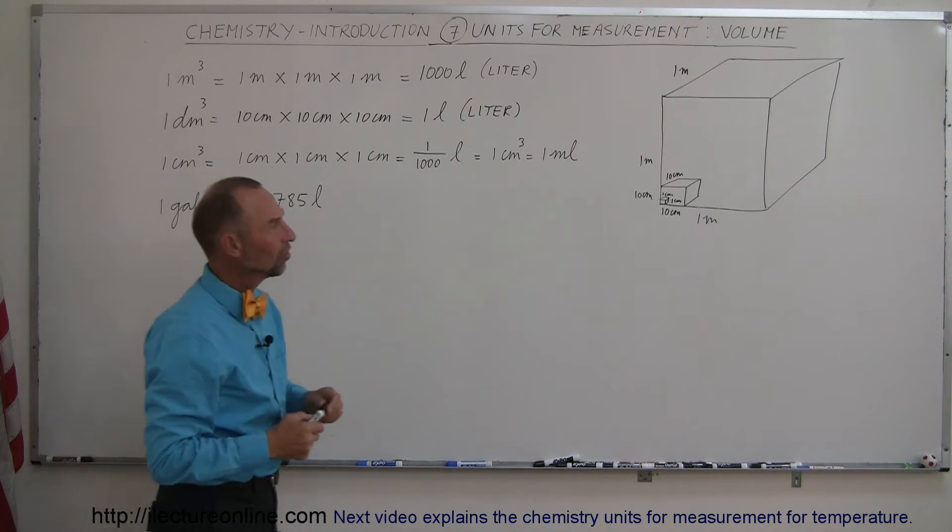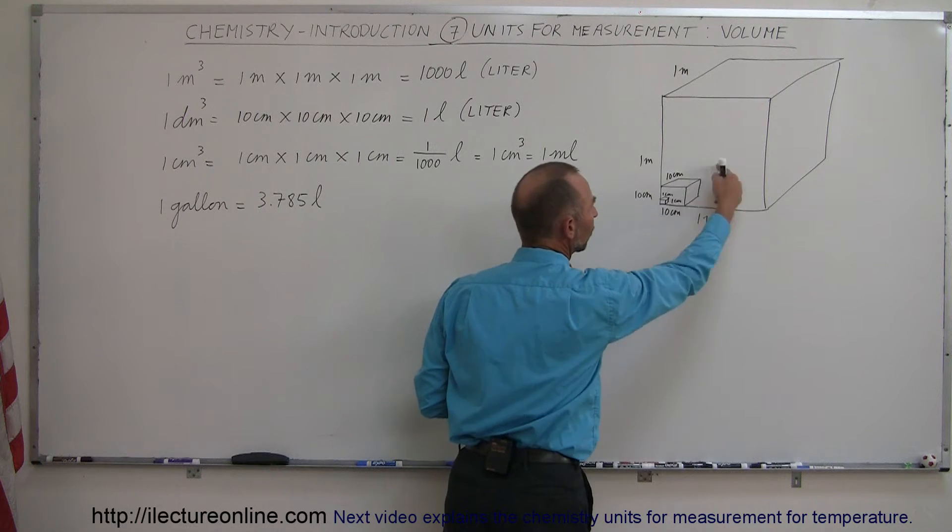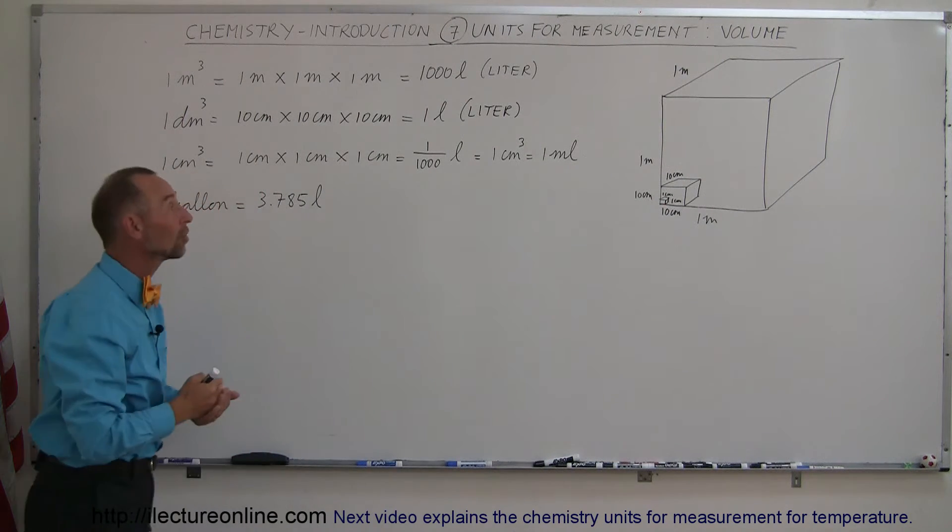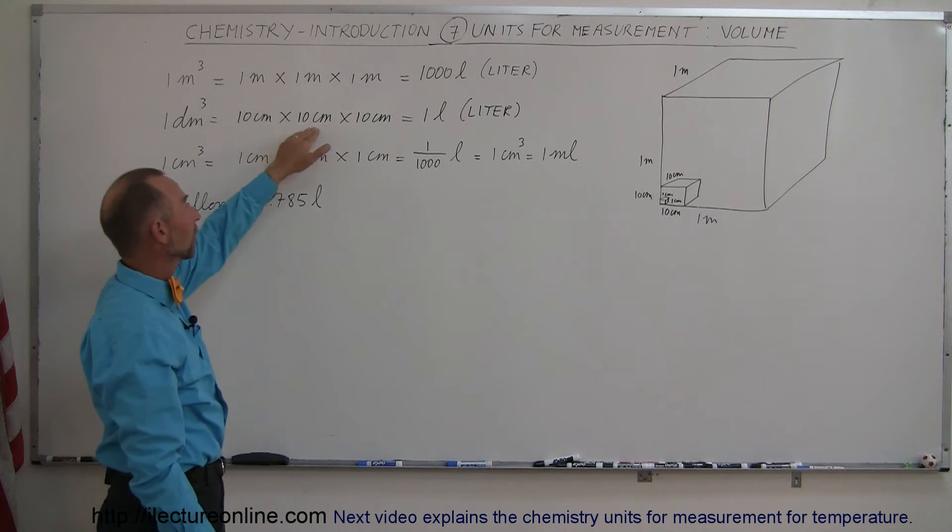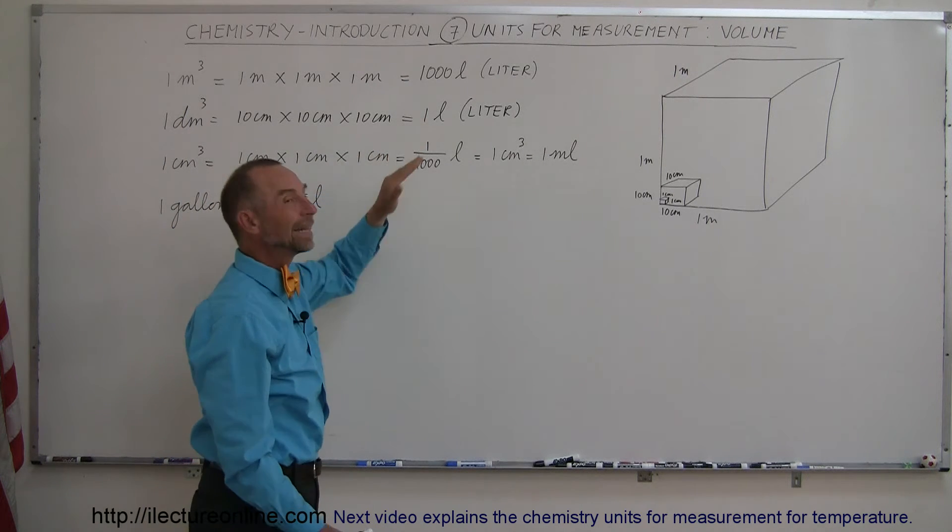And of course, as you can see, since this is one-tenth the length of a meter in each dimension, a cubic decimeter is one one-thousandth of a cubic meter. So here we can see that if we multiply 10 centimeters by 10 centimeters by 10 centimeters, we get a cubic decimeter, or we get one liter.